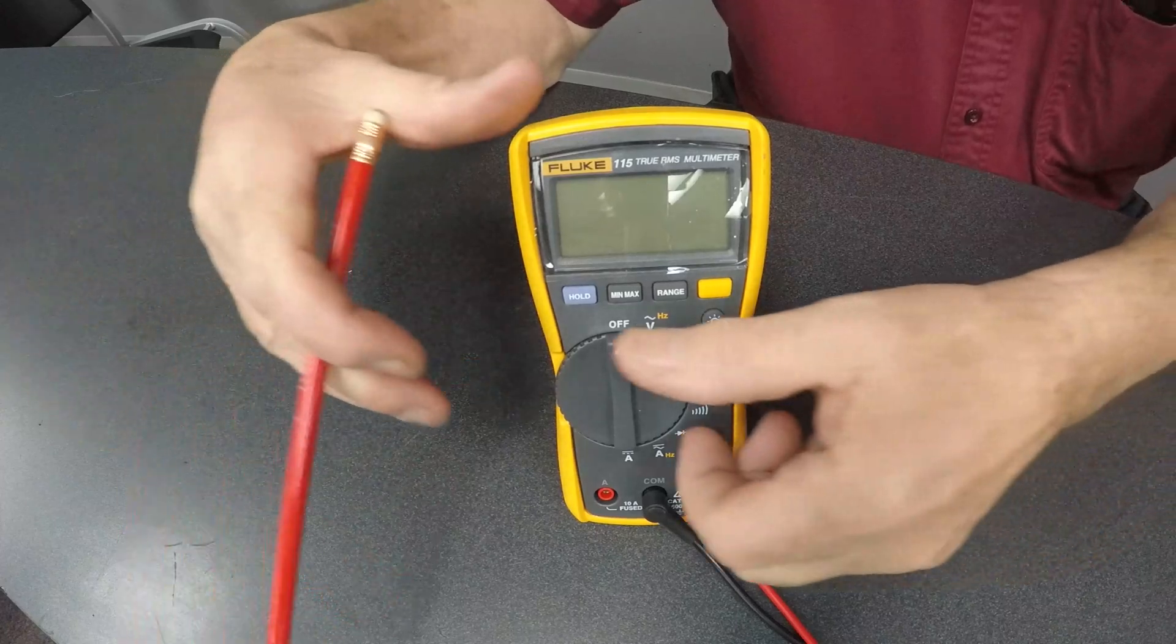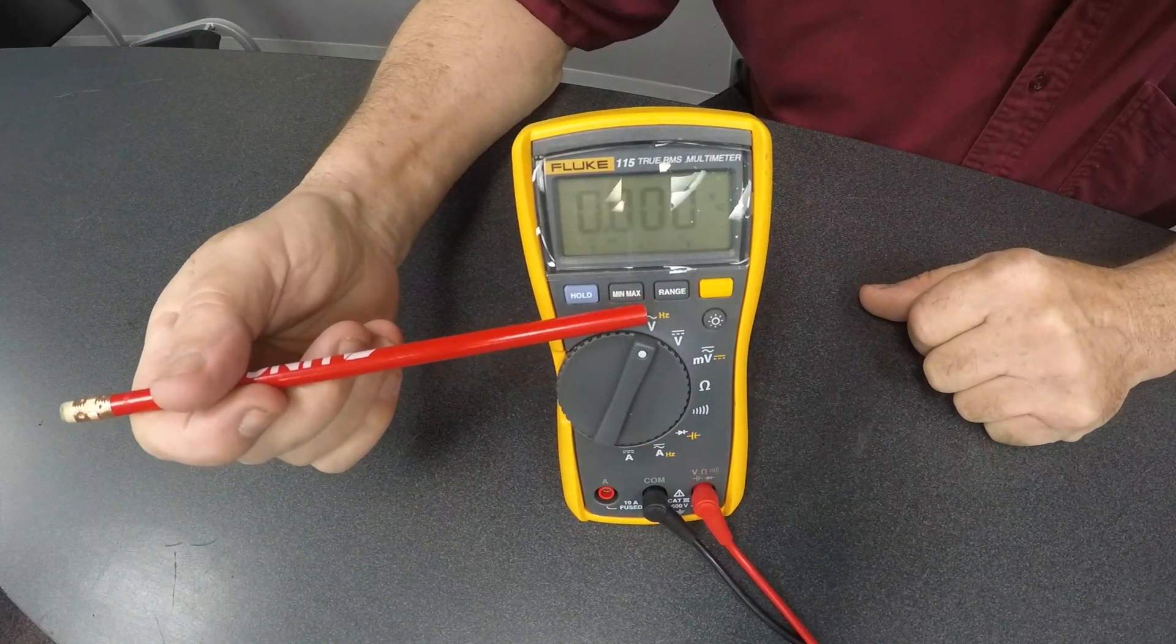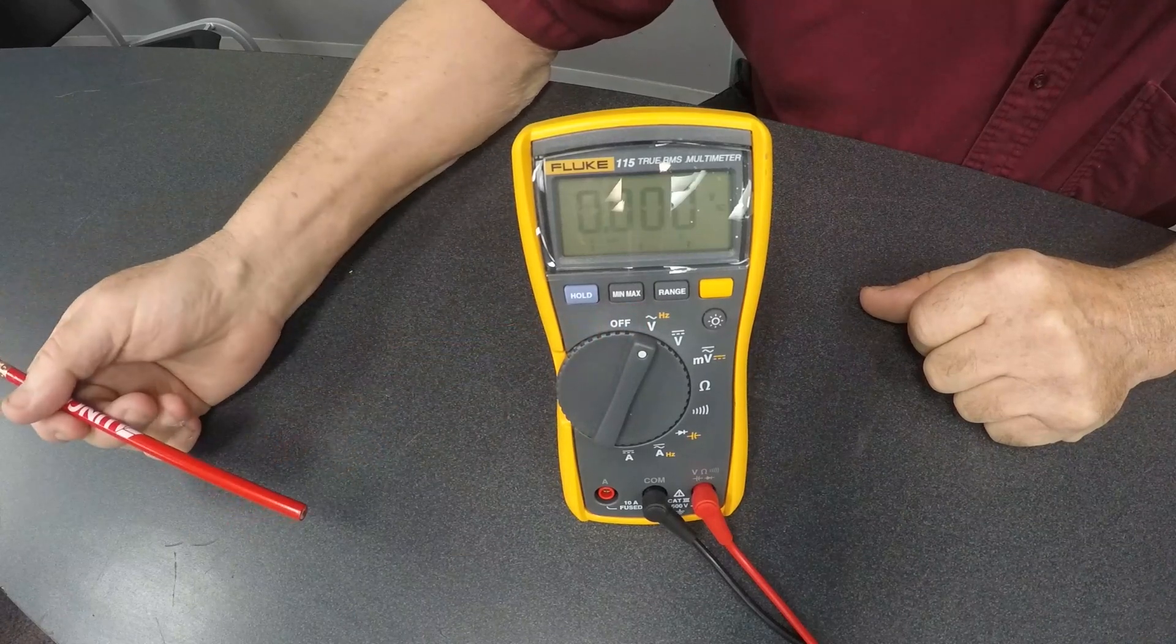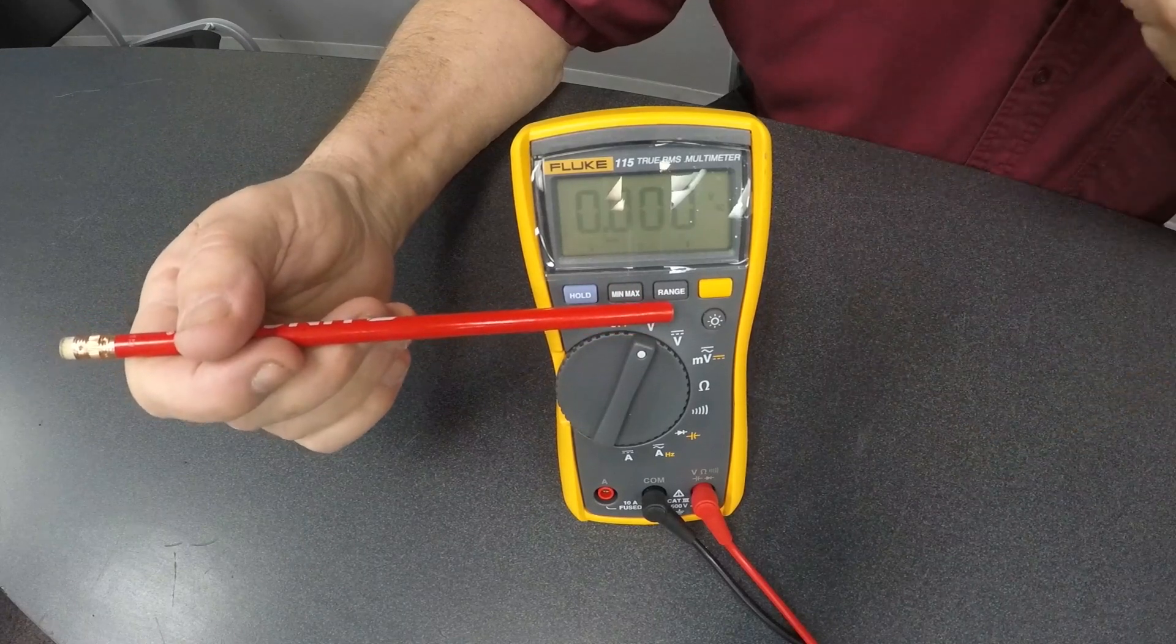In the first one here, we're going to turn it over to AC volts. AC volts has this little line right here. It looks like a raised eyebrow. And the beauty about this is we can check AC voltage.